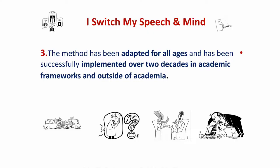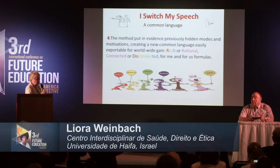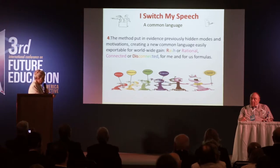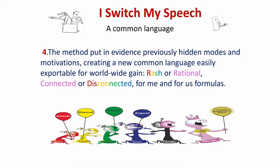Number three: the method has been adapted for all ages and has been successfully implemented over two techniques in academic frameworks and outside the academy. Number four: you need a common universal language in order to cooperate between hidden and speech behaviour. Here you see rush action, unconscious action — red for children at the age of four. A red is talking, a red is blaming, the green one is obeying, the blue one is arguing.